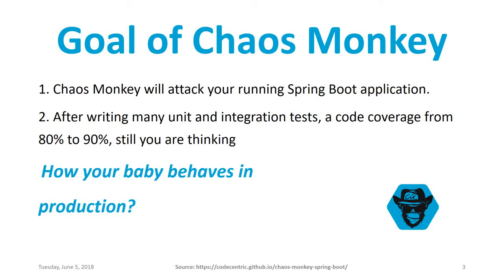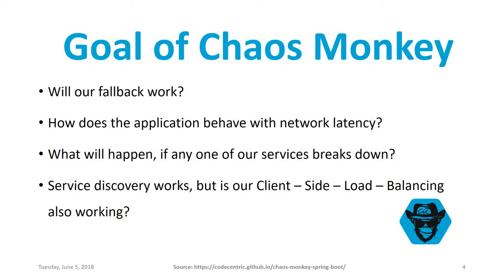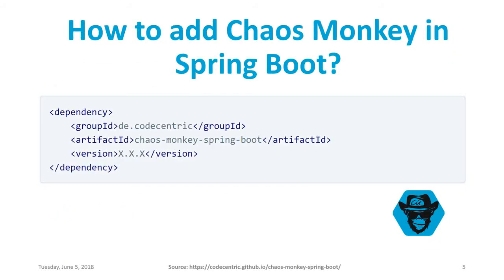The goal of Chaos Monkey is that it will attack your running Spring Boot application. After writing many unit tests and integration tests with code coverage of 80 to 90%, you still wonder how your application behaves in production. Will the fallback work? How does the application behave with network latency? What happens if one of your services breaks down? Does service discovery work, and is client-side load balancing working?